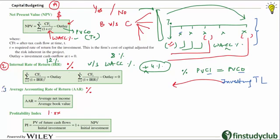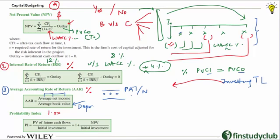The third technique is the average accounting rate, which is considered a very poor technique — it is not based on cash, nor does it account for time value of money. It asks: if my project runs for three years, what is the average book value of the asset? The numerator is total profits over three years — PAT, not CFAT — divided by the number of years, giving average annual profit divided by average investment. A very bad ratio.